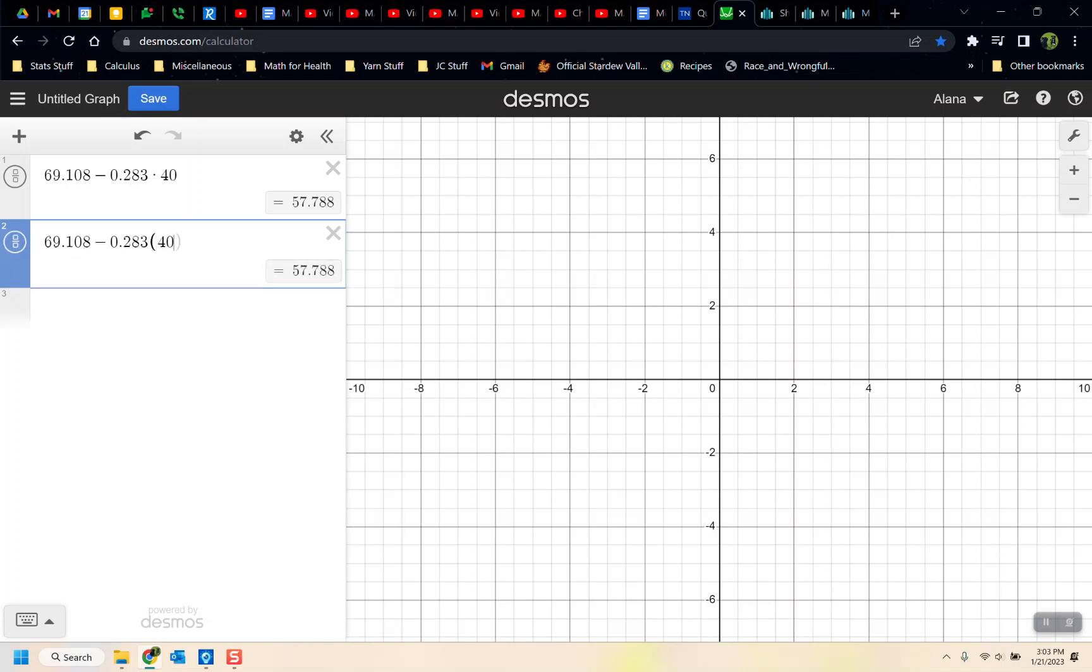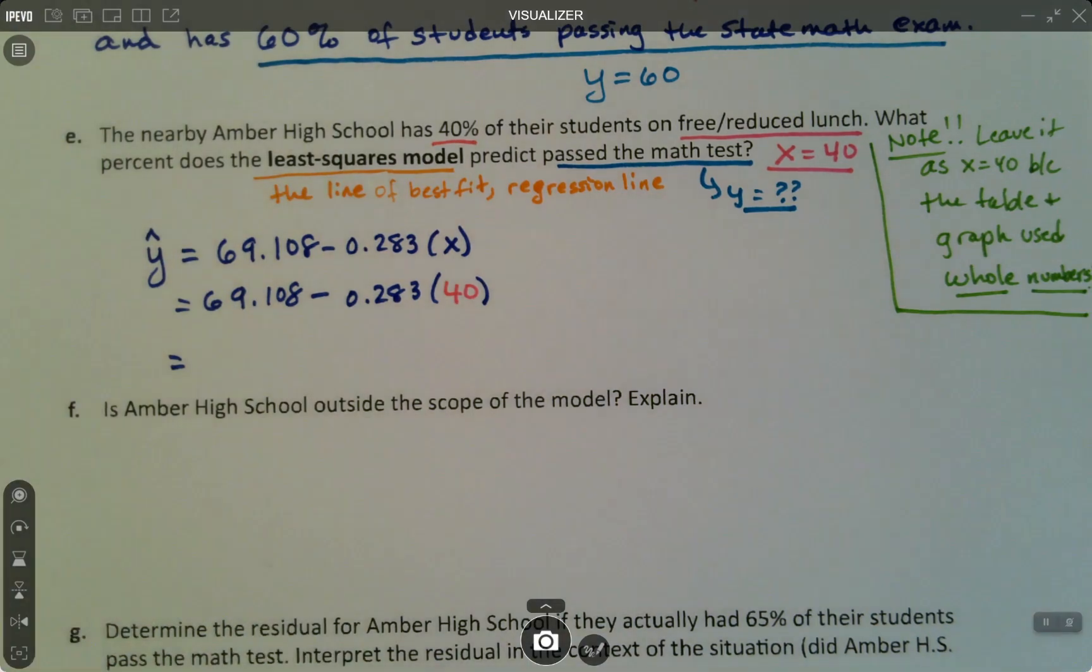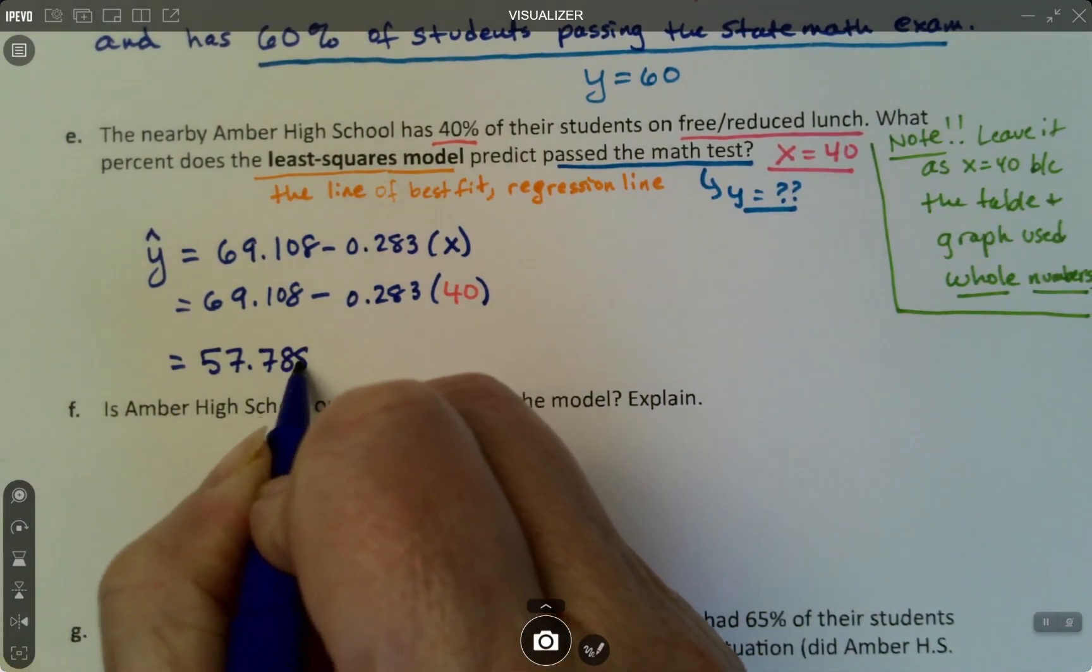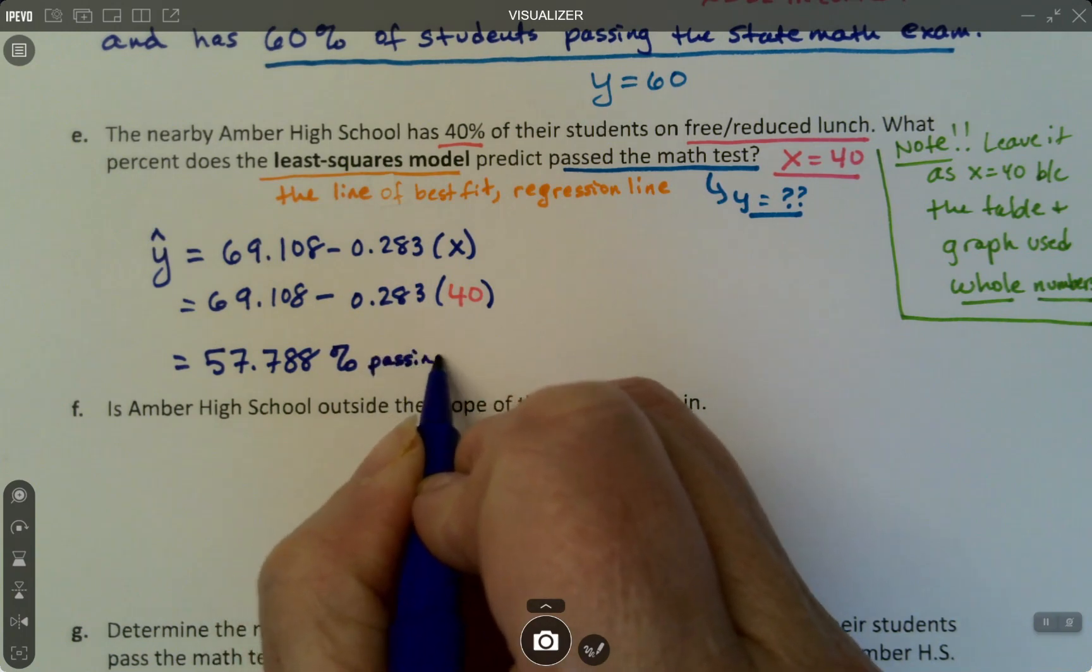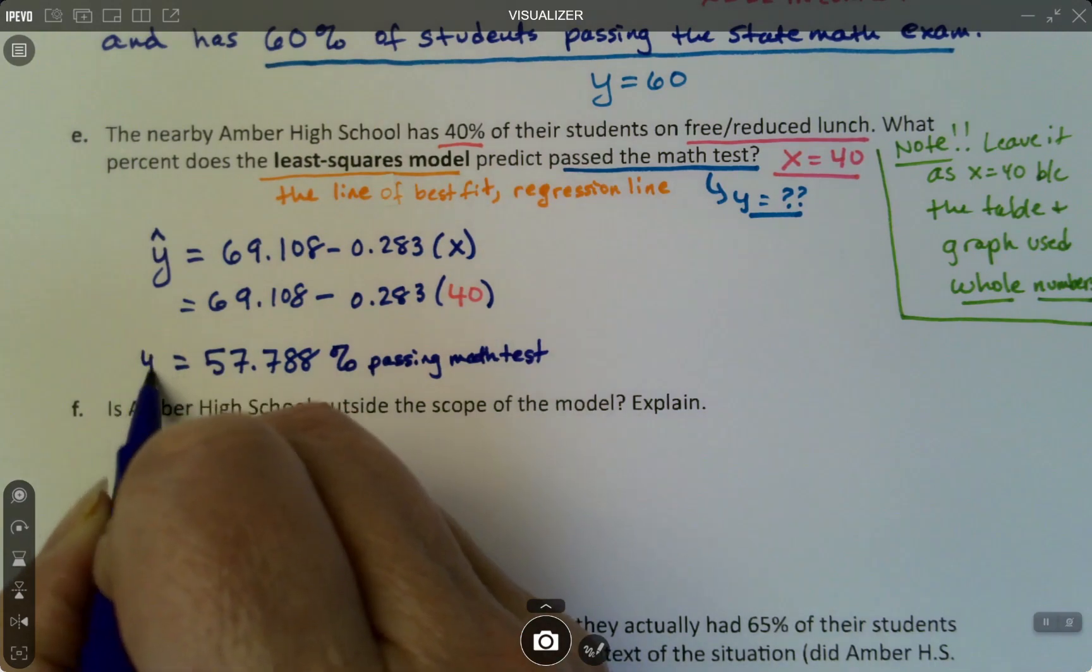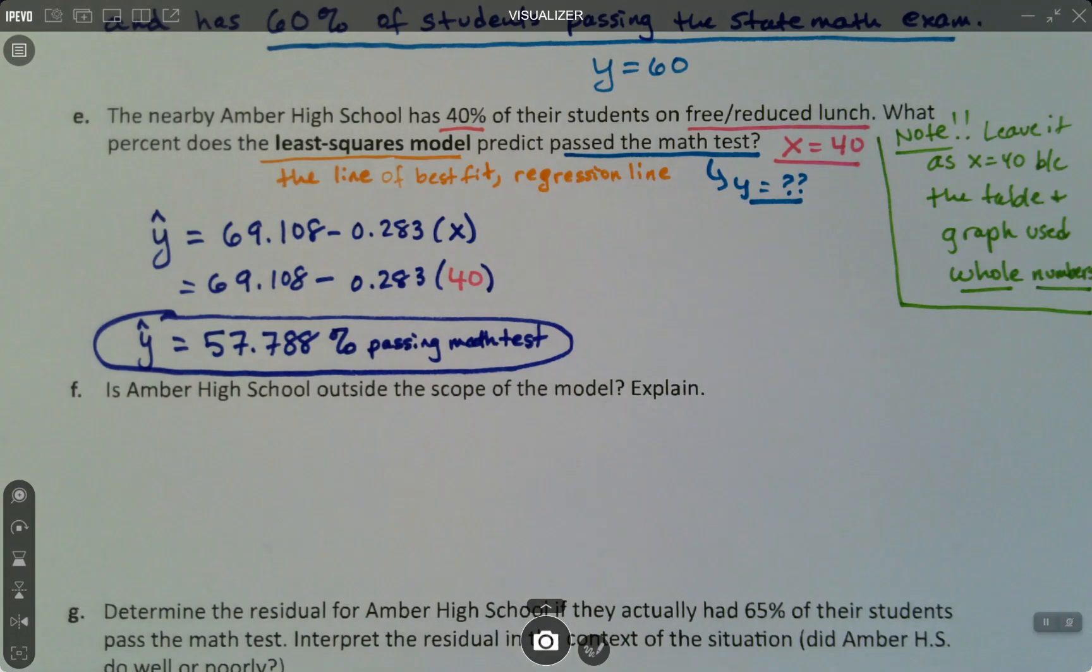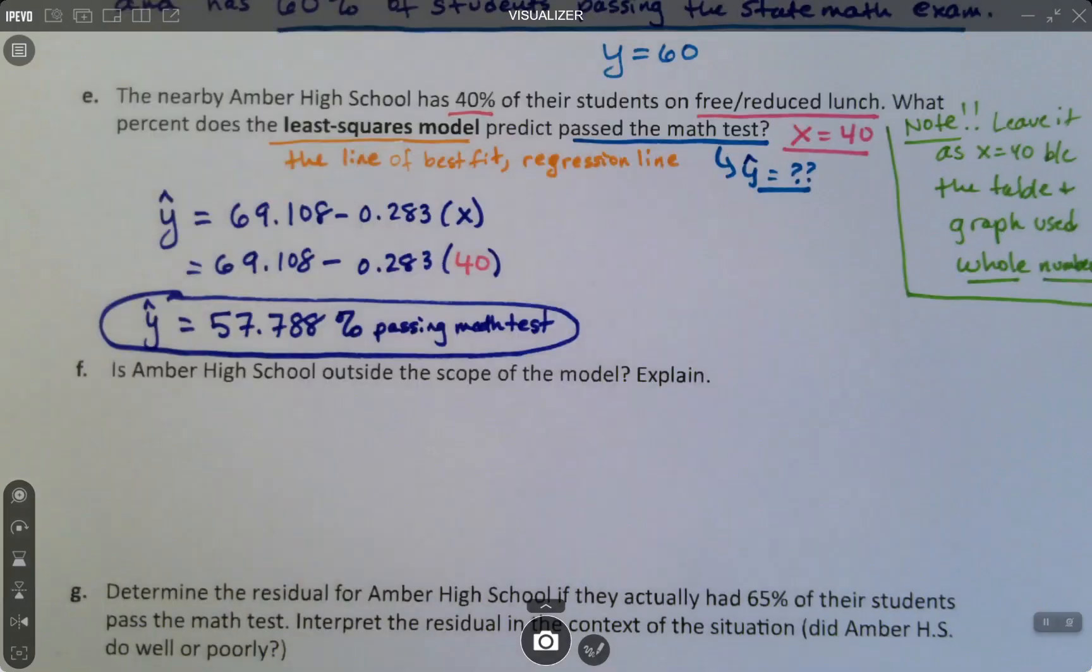Just so you can see, multiplication can be written with the times dot or be written with the parentheses. Now, I know there are some of you that are sitting there going, but I want it the other way, I want it the algebra way. Well, it's fine. It'd be this way, right? Negative 0.283 times 40 plus 69.108. If you use the other version of the equation, it's the same thing. It doesn't matter which way you write it. What matters is that you put the x in the correct spot with the negative 0.283, and that you multiply, and then add. Either way, it's 57.788. And this would be percent. It's technically the percent passing the math exam. That's your y-hat value.